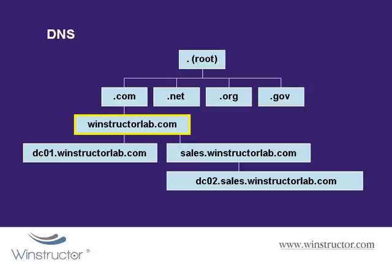As long as we're not infringing on any trademark with our choice of domain name, and as long as we continue to pay for the right to use it, then you can effectively consider it your own. From this point onwards, once we have a domain name under our control, we can create as many subdomains as we like and we don't have to ask anyone's permission. If we were to own the winstructorlab.com domain and wanted to create a new subdomain called sales, our own DNS servers would be responsible for communicating with that sales subdomain.